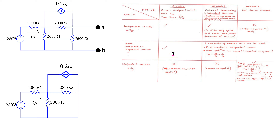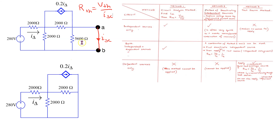Method one says we need to short-circuit the terminals of interest, then find the short-circuit current I_sc, and R_Thevenin is given by V_Thevenin / I_sc. When we short-circuit the terminals, the 5.6 kΩ resistor is in parallel with the short circuit. Since current takes the path of least resistance, all current flows through the short-circuit path, and this resistor can be effectively removed. This redrawn circuit replaces the 5.6 kΩ resistor with the short-circuit path, and the task is to find this short-circuit current.